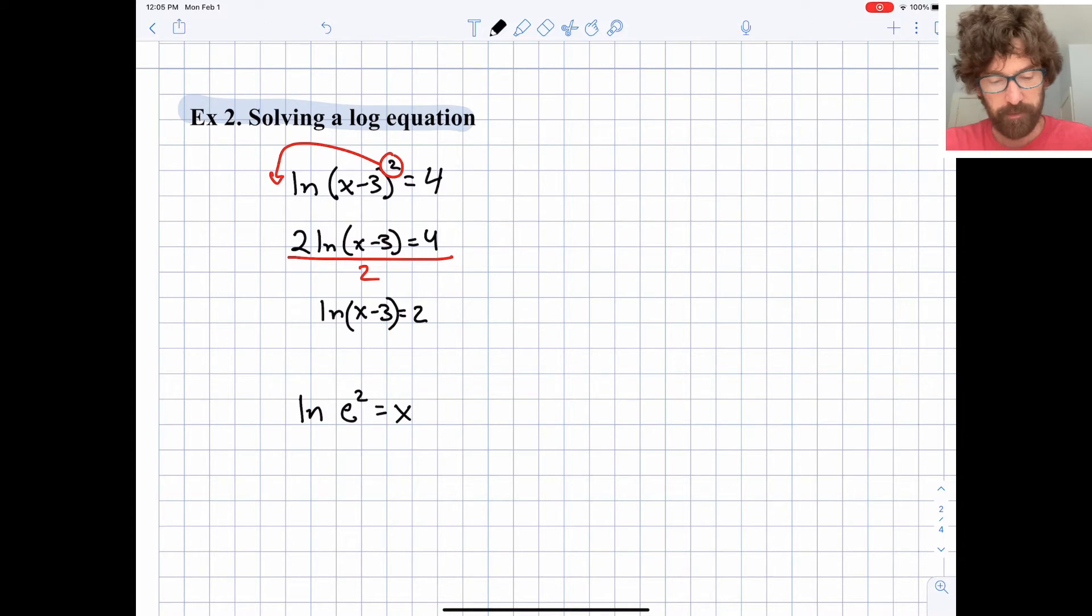And we get the natural log of x minus 3 is equal to 2. And what I would then do as a last step is just simply remember that log base e of x minus 3 is the same as the natural log of x minus 3. And we can write this in exponential form.